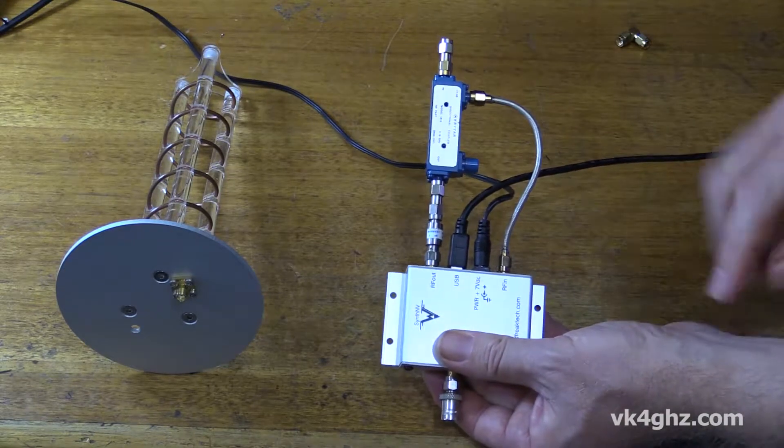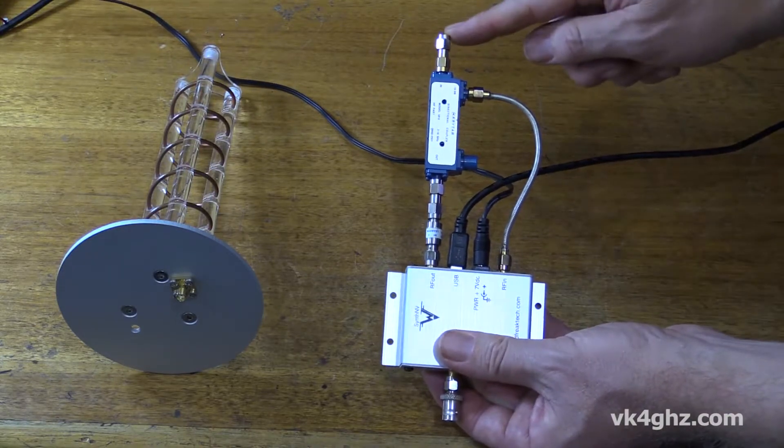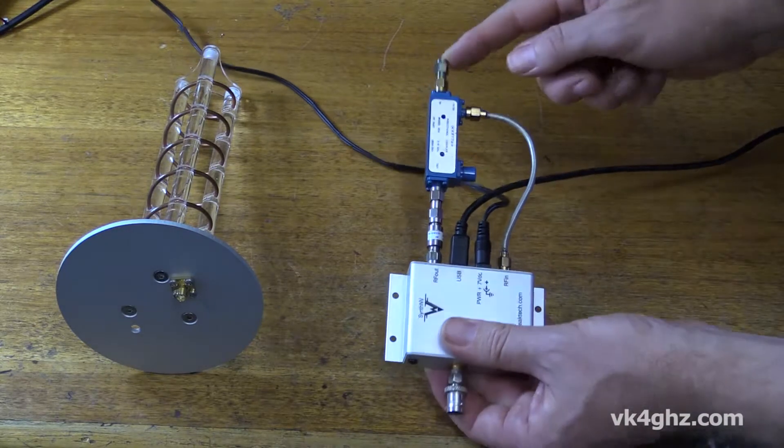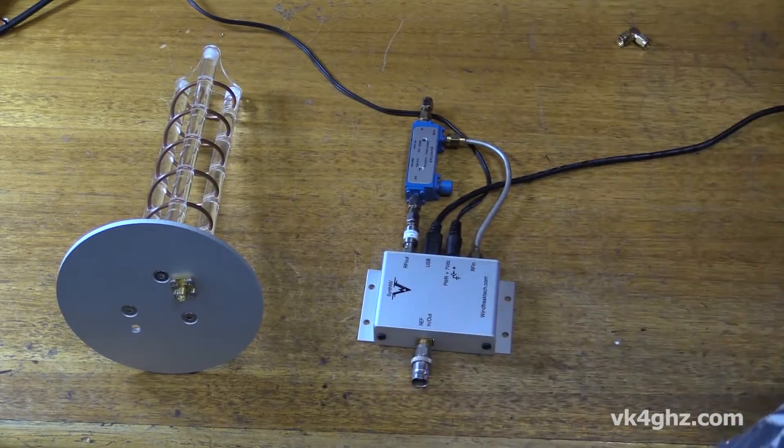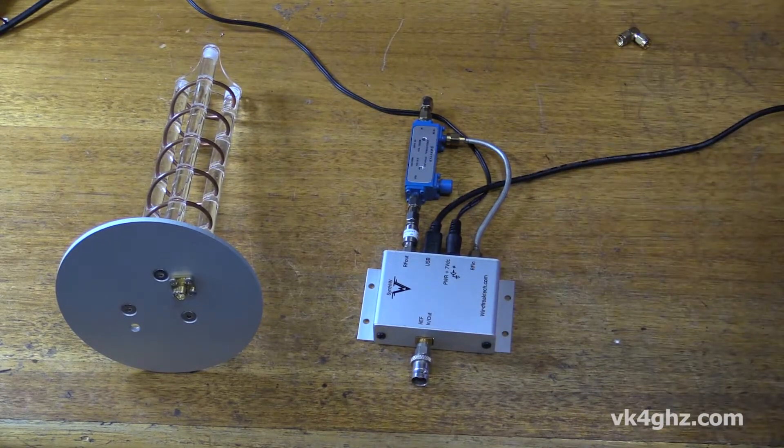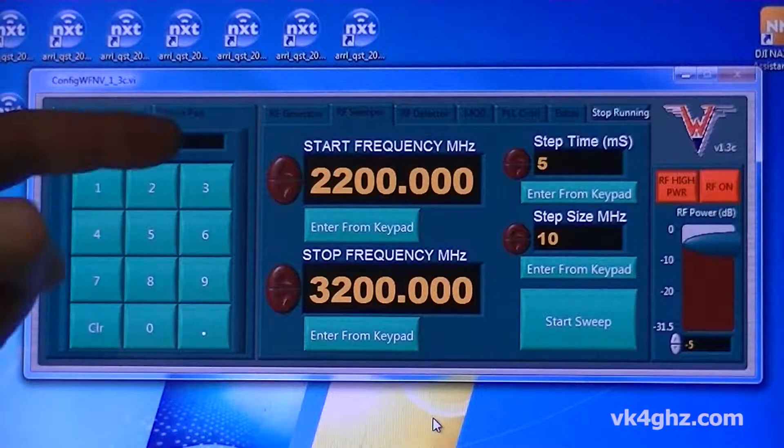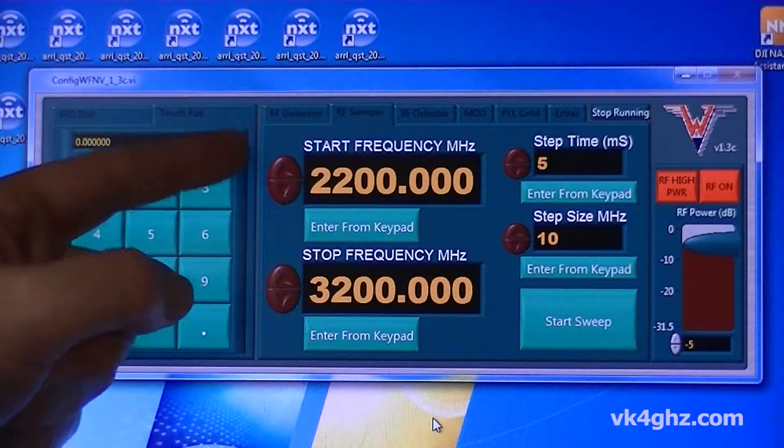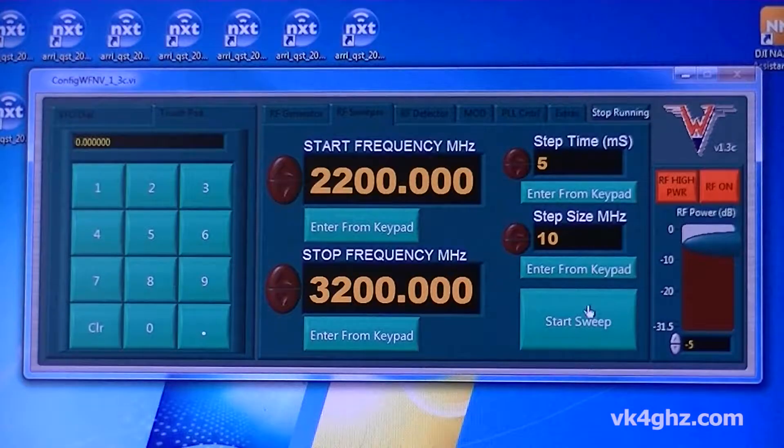Now first of all, we need to calibrate the system, and to do that we just leave the device under test port open circuit and we'll start a sweep to take some samples to level it out. I've specified a start frequency of 2200 megahertz and a stop frequency of 3200 megahertz. We'll start a sweep.